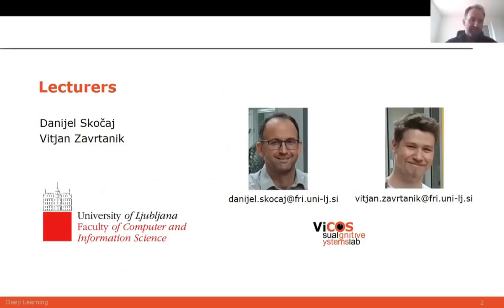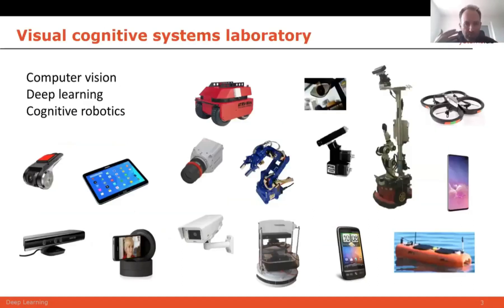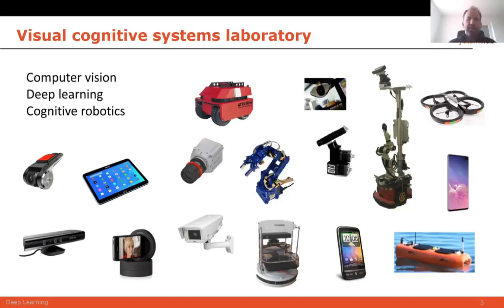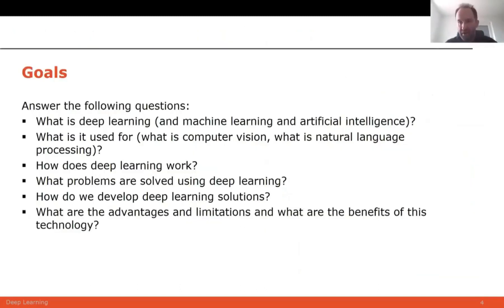We are both coming from the same university, from the Faculty of Computer Information Science. We are coming from the Visual Cognitive Systems Lab, which is dealing with intelligent systems — visually enabled intelligent systems, as we usually say. Basically, we would like to develop mainly competencies related to computer vision, which lately is almost entirely based on deep learning techniques, and to bring these competencies to different robots or platforms, from mobile phones to mobile robots.